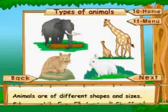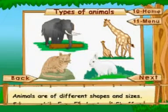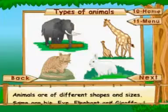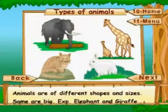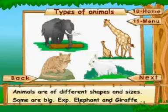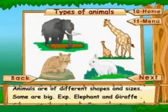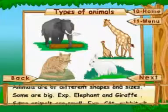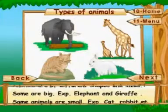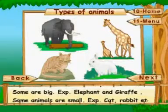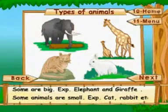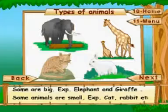Types of animals. Animals are of different shapes and sizes. Some are big — example, elephant and giraffe. Some animals are small — example, cat, rabbit, etc.